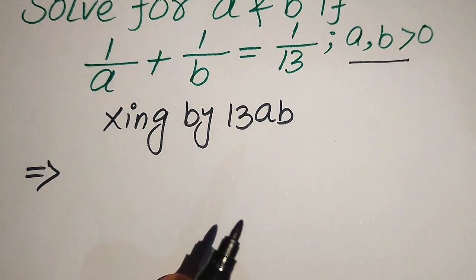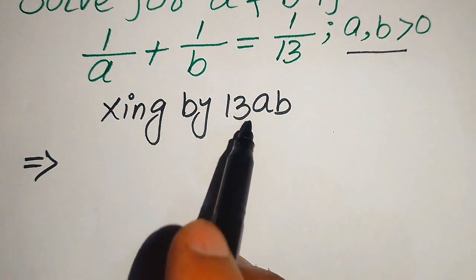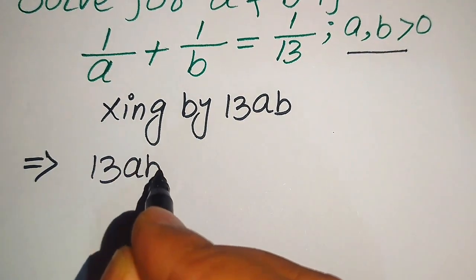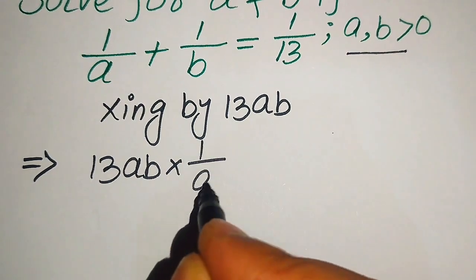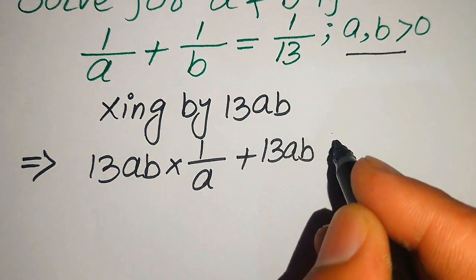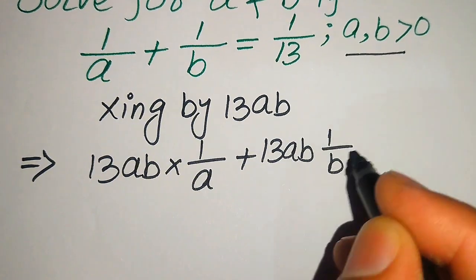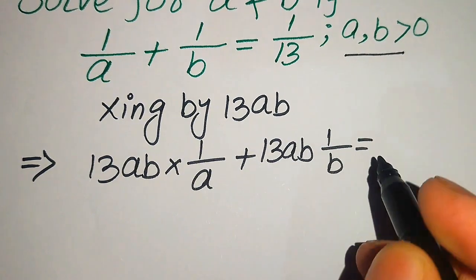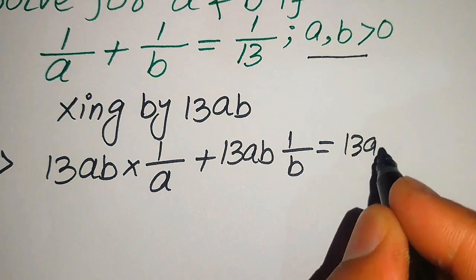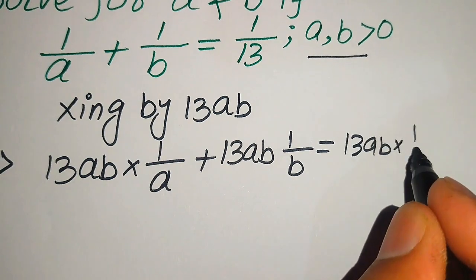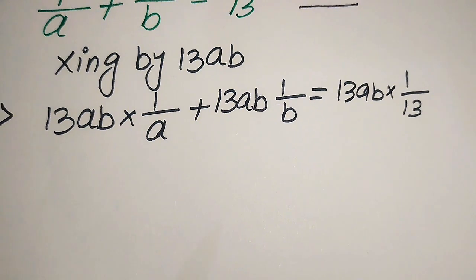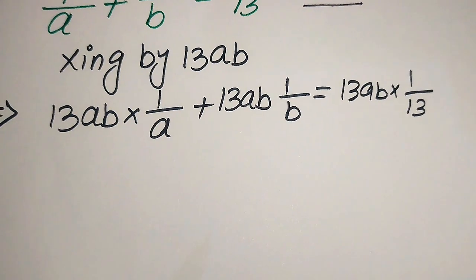When we distribute, we multiply each term by this value, so it is written as: 13ab multiplied by 1 over a, plus 13ab multiplied by 1 over b, equals 13ab multiplied by 1 over 13. Now we need some simplifications.